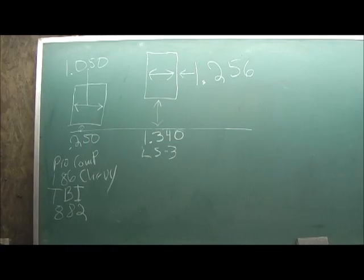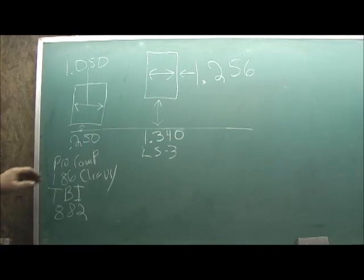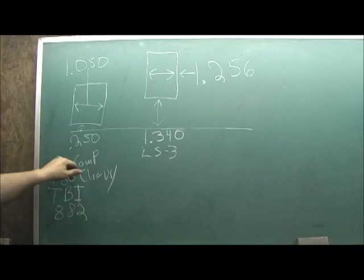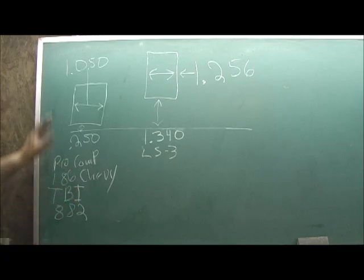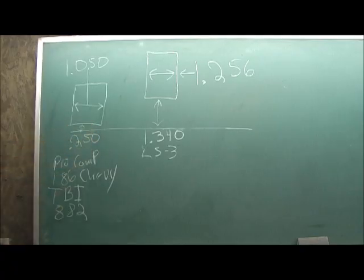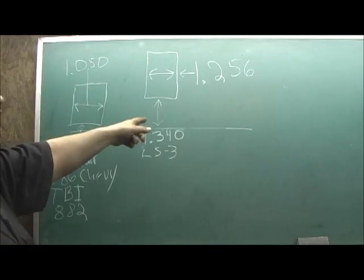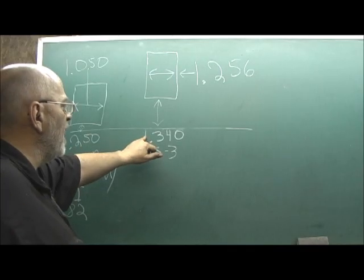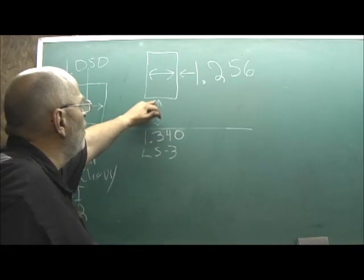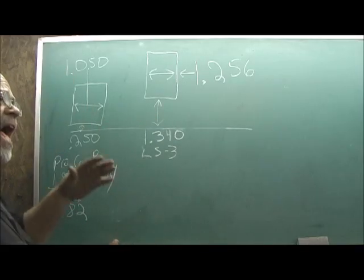Now, what we got here, right here, pretty much a quarter of an inch. This is going to be the Pro Comp head, the 186 double hump, the TBI throttle body head, the 882 Chevrolet head. All of them fall in that quarter category. They're going to be right there at 250 from the deck surface of the head to the bottom of the port. Now, look at the LS3, 1 inch, 340 thousandths from the deck surface to the flange. They've elevated the runner.